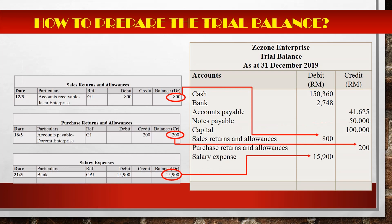How about contra accounts such as sales return and allowances account and purchase return and allowances account? Look at their remaining accounts, then transfer them in trial balance. It's the same way as with expenses accounts — we transfer their balance to the debit side in trial balance.